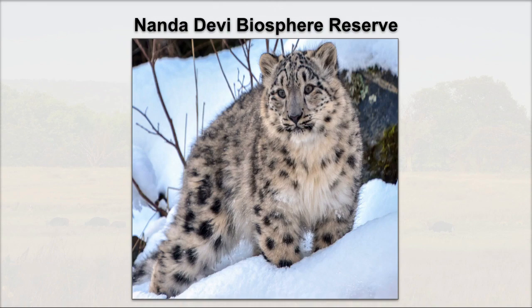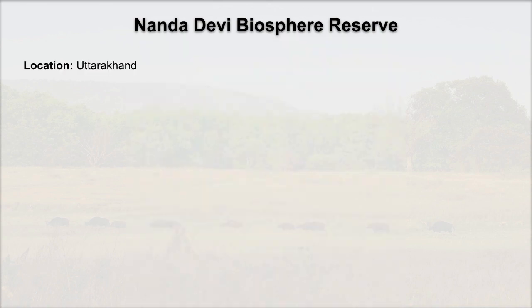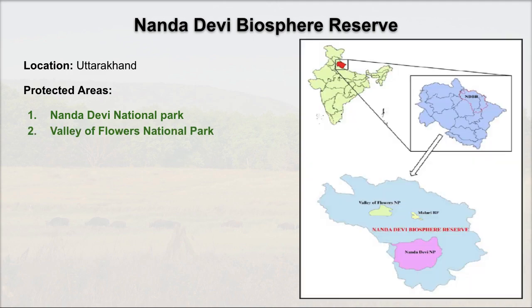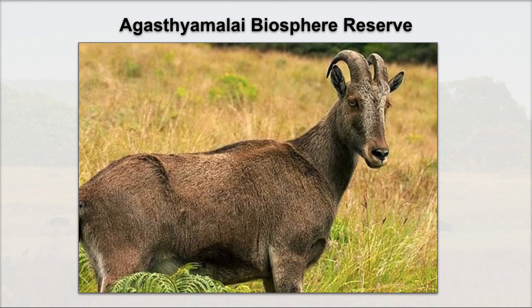Next is Nanda Devi Biosphere Reserve, whose key fauna is the Snow Leopard. The Snow Leopard is important because the government has initiated many programs under the Snow Leopard Conservation Program — you should know the IUCN status as well. The protected areas of Nanda Devi Biosphere Reserve are Nanda Devi National Park and Valley of Flowers National Park. Nanda Devi is in the news due to the glacial outburst in Uttarakhand, which makes it important from a UPSC perspective. On the zoomed-out map you can see both protected areas located in Uttarakhand.